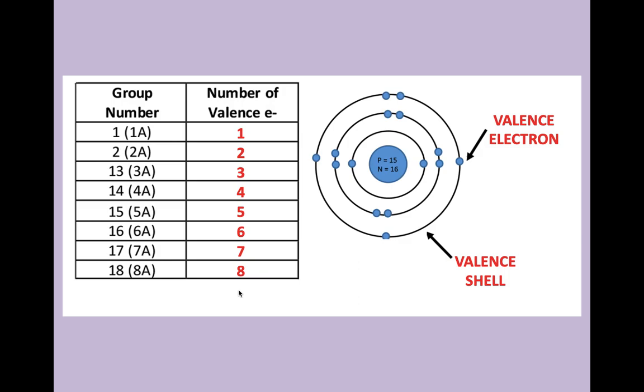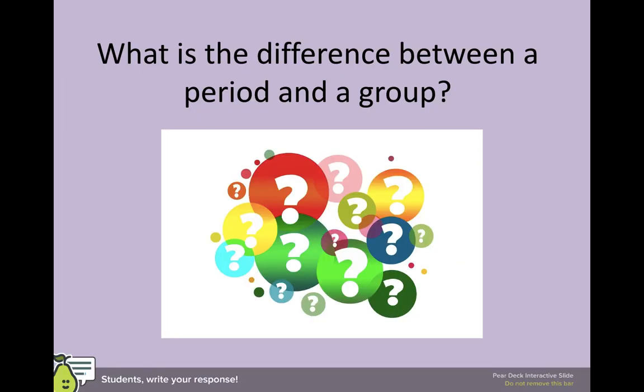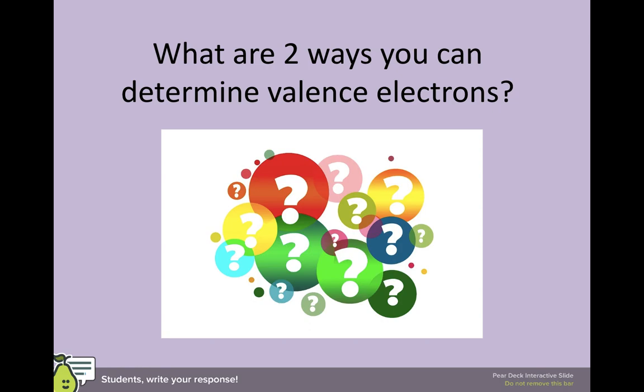Remember, this does not work for the groups in the middle, groups three through 12. So, little recap. What is the difference between a period and a group? Take a minute. Think to yourself. A period goes left to right on the periodic table and a group goes up and down. What are two ways you can determine valence electrons? The first way you can determine valence electrons is by drawing the Bohr model and counting the electrons in the outermost shell. The second way is you can look at the group numbers.